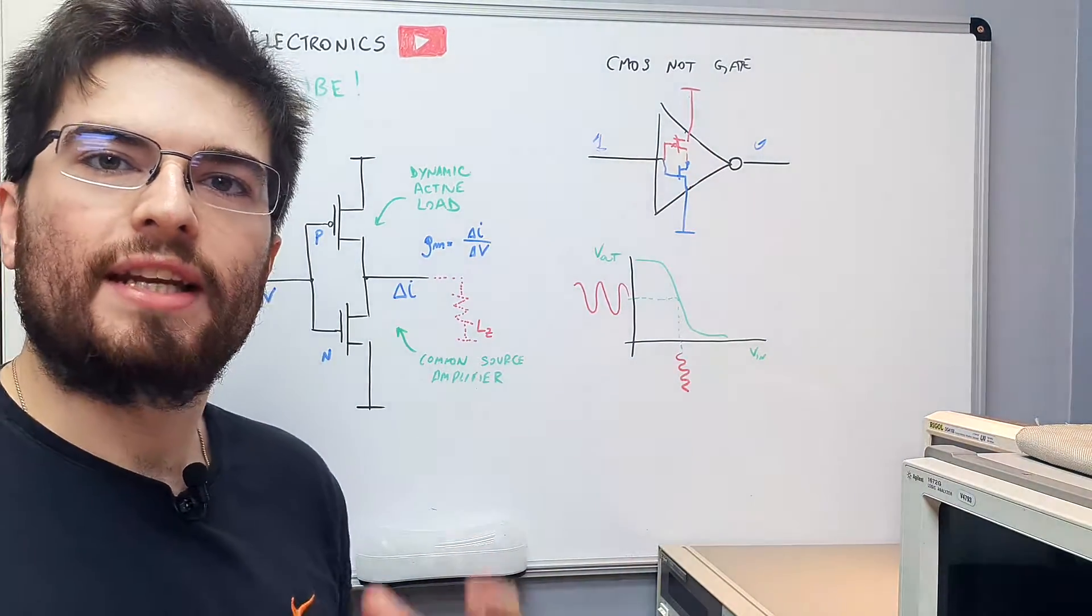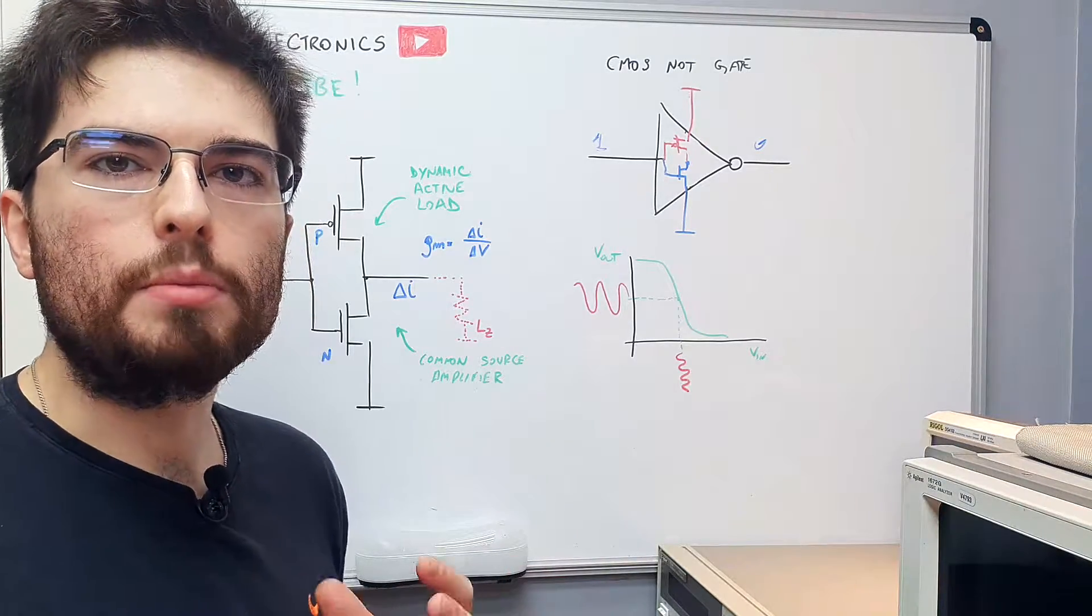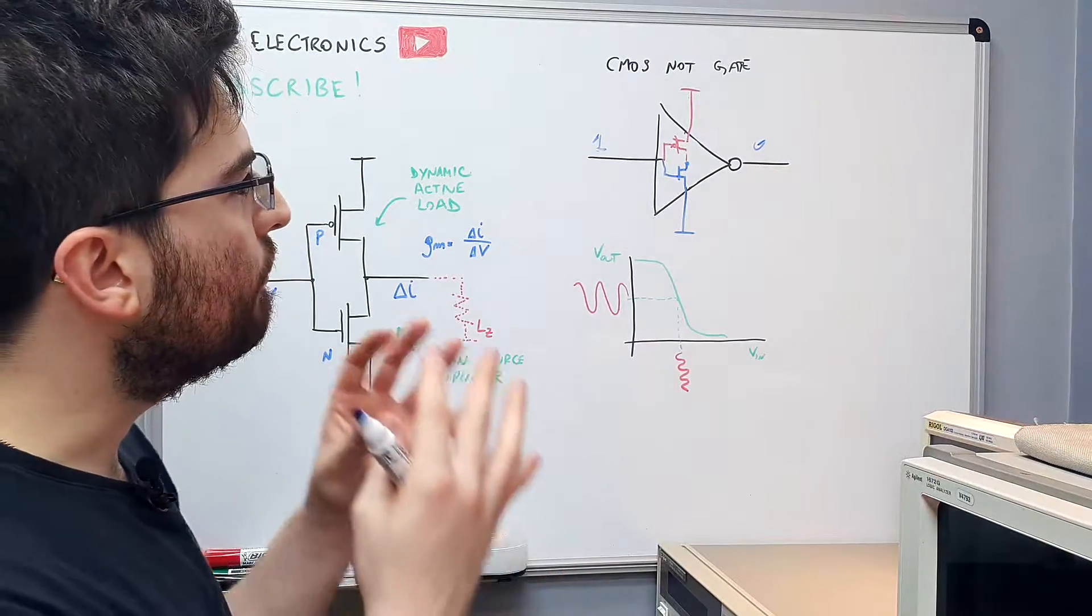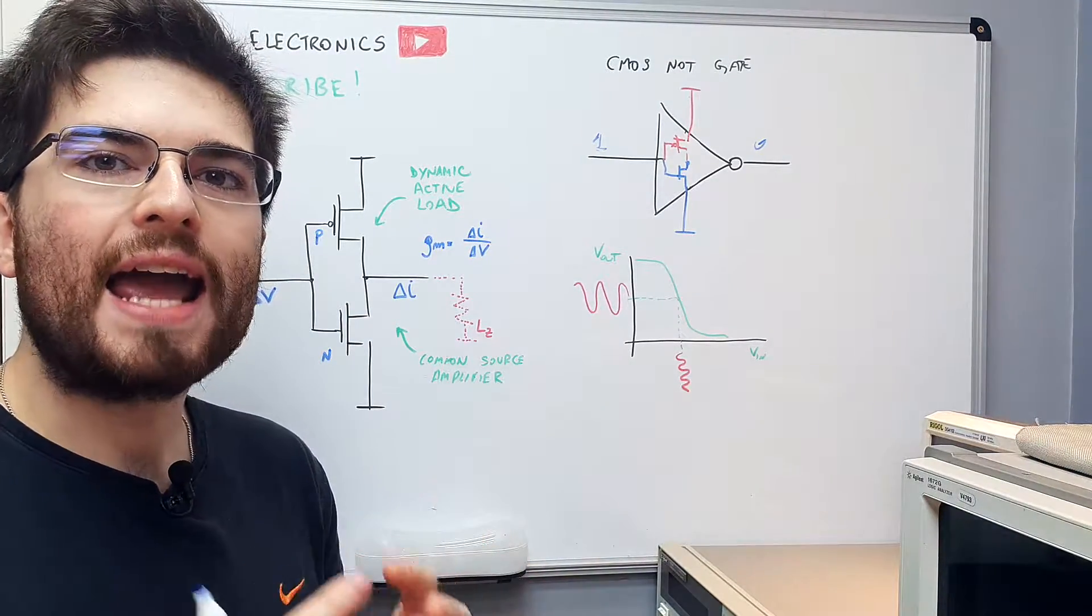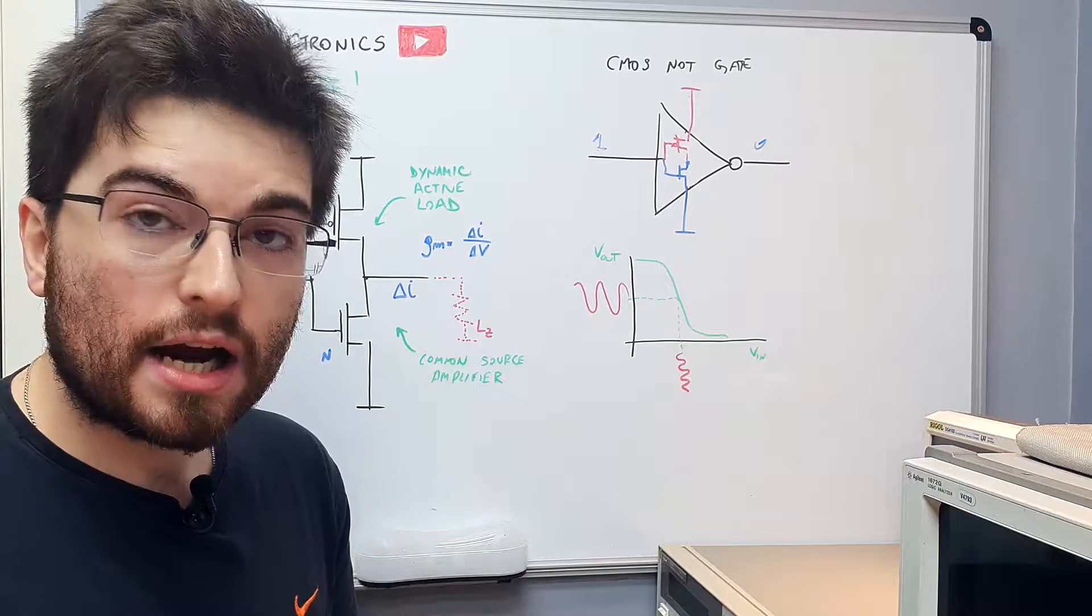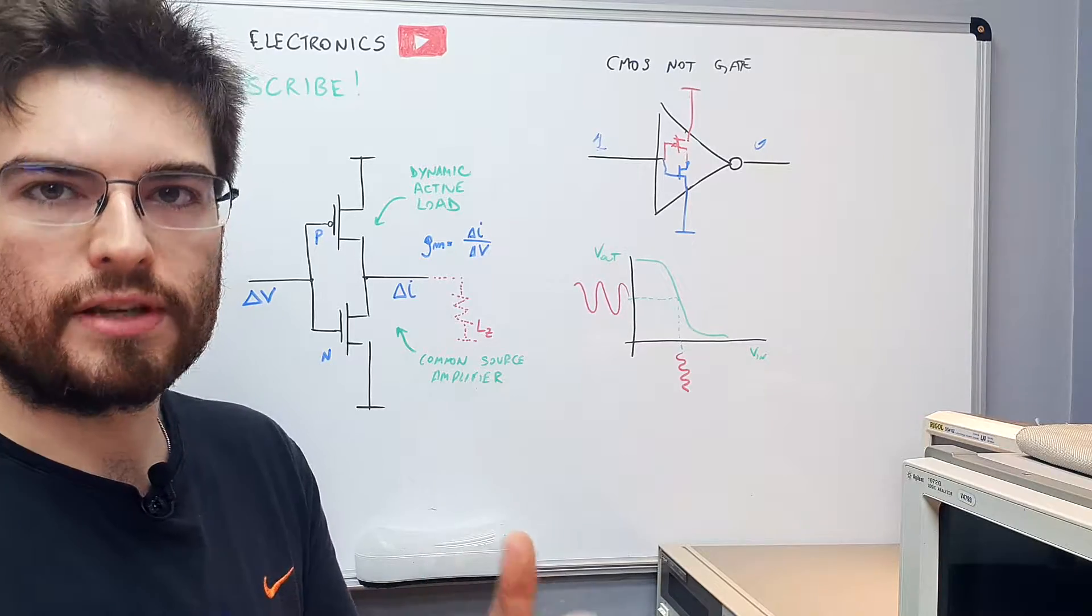From the perspective of an analog circuit, from the perspective of a small signal on the input, we can think of the inverter CMOS gate as a very high gain analog and linear amplifier with inverted gain. So with a very high negative gain.